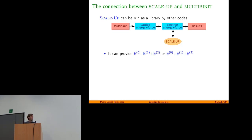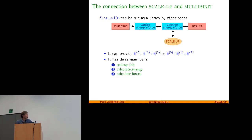SKLAP can interact with other codes, in particular multivinit. Multivinit calculates the lattice energy and forces, then calls SKLAP to give corrections associated with the electrons. SKLAP can be called as a library to provide the electron part or the whole energy using just three main calls: an initialization step, then it can calculate energy or forces. You provide the geometry and it gives the correction needed - that is what multivinit is doing right now.